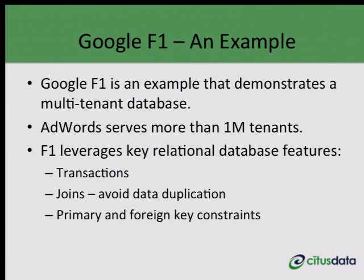Google's F1 paper is a good example that demonstrates a multi-tenant database that scales this way. The paper talks about technical challenges associated with scaling out the Google AdWords platform to over a million tenants. It also describes common relational database properties F1 leverages: transactions, joins across tables to avoid data duplication, and database constraints to ensure each tenant's data remains consistent.